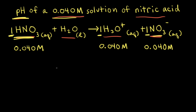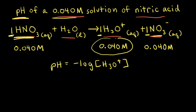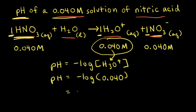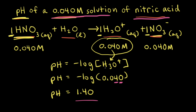Since our goal is to calculate the pH of this solution, we know that pH is equal to the negative log of the concentration of hydronium ions. Therefore, we just need to plug in the concentration of hydronium ions into our equation. This gives us pH = -log(0.040), which is equal to 1.40. So even though this is a pretty dilute solution of nitric acid, because nitric acid is a strong acid, the pH is pretty low. Also note, since we have two significant figures for the concentration of hydronium ions, we need two decimal places for our final answer.